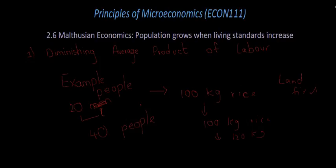Let's say that every person needs around 35 kgs of rice to live. With the first 20 people, every person gets more than 35 kgs, so they are all able to live. However, with 40 people and 100 or 120 kgs of rice, they are not able to get 35 kgs, so their living standards decrease when there is increasing population.